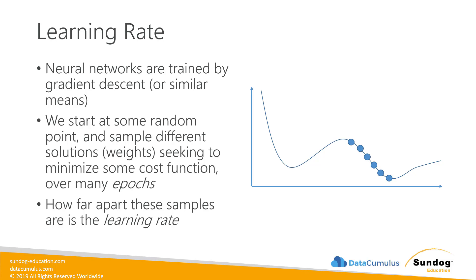Let's talk about learning rate first. You need to understand how neural networks are trained. They use a technique called gradient descent, or something similar to it — there are various flavors. The basic idea is that we start at some random point of weights in our neural network and sample different solutions, different sets of weights.